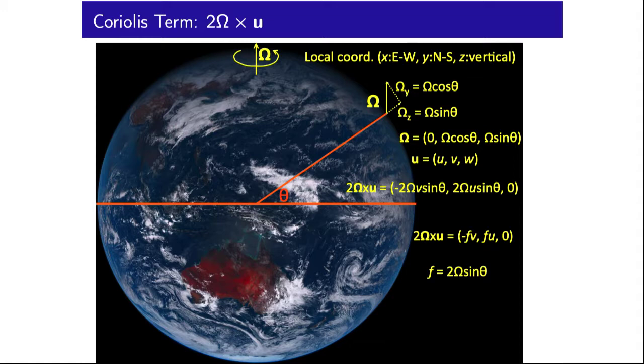Typically, this is written as negative fv in the x, fu in the y, where f equals 2 omega sine theta, and it's referred to as the Coriolis parameter.